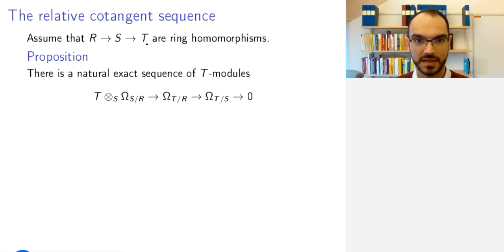Now we look at T as an R-algebra, but then this maps into the module of Kähler differentials that are S-linear. The map is simply by taking dT here and mapping it to dT.